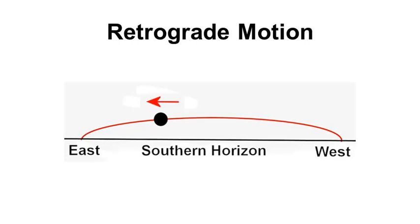Sometimes, though, planets appear to move in the opposite direction. That is, planets appear to move backwards. This apparent backward movement is called retrograde motion.